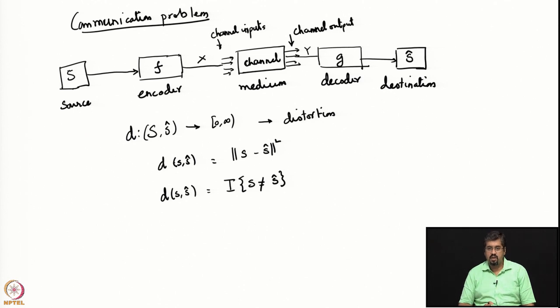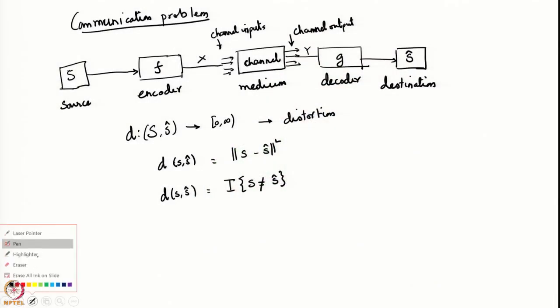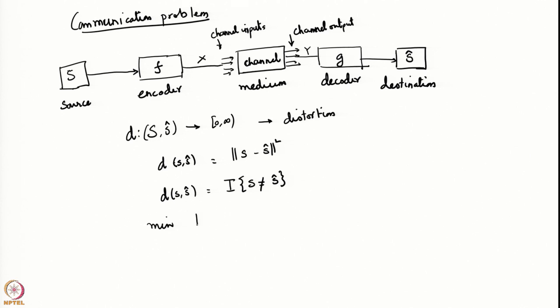There are many different ways to define a distortion between source and destination. This distortion is part of the problem definition — it defines what we mean by quality of communication and what we mean by recovery of the source at the destination. The problem of communication is then to come up with the right choice of encoder and decoder — that is, to minimize the expectation of d(s, s-hat) over all functions f and g.